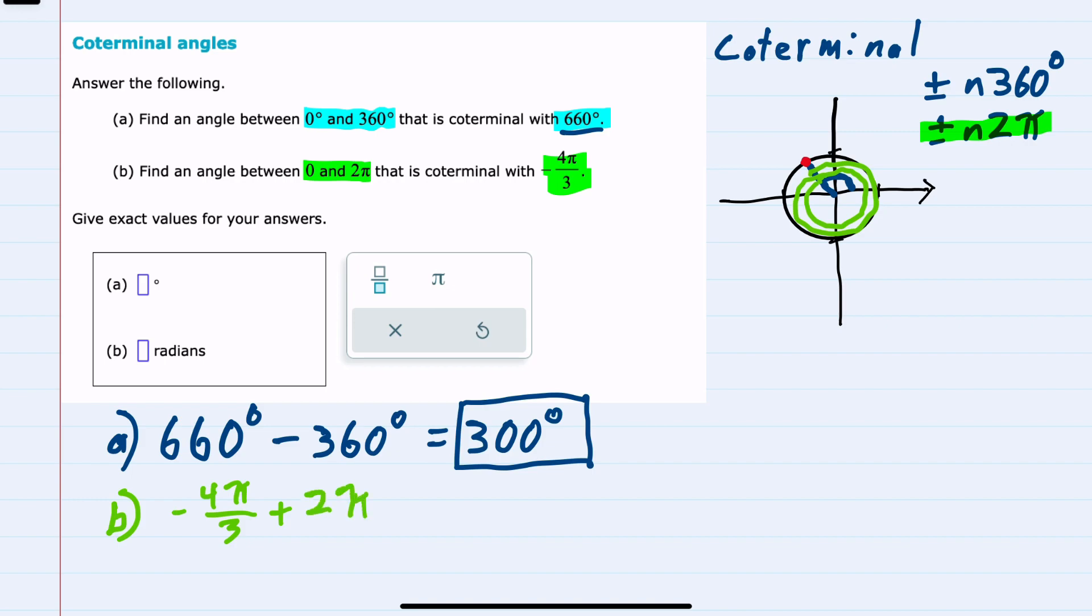Getting a common denominator of 3, I'll make this 6π/3. Then negative 4π/3 plus 6π/3 gives us 2π/3, which is in the range of 0 to 2π.